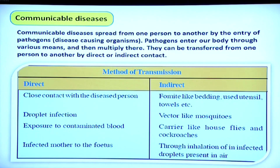Disease can also spread through fomites like used utensils, towels, and bedding. TB is one such disease that can spread if the infected person's personal items are shared in the family. It can also be spread by carriers like house flies and cockroaches, or through inhalation of infected droplets from the air — influenza usually spreads through this means.